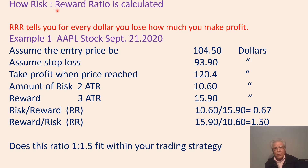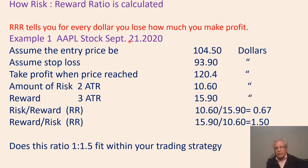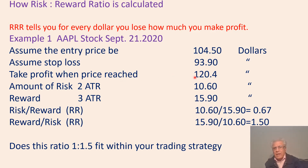Now, how is risk-reward ratio calculated? Risk-reward ratio tells you for every dollar you lose, how much profit you make. This example is taken from Apple stock on September 21st, 2020. Assume the entry price is $104.50. Assume the stop loss is $93.90. Take profit when the price reaches $120.40. The amount of risk is 2 ATR; each ATR is $5.30, so 2 ATR equals $10.60.